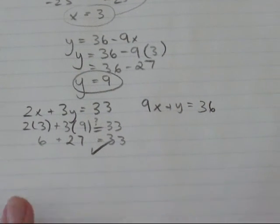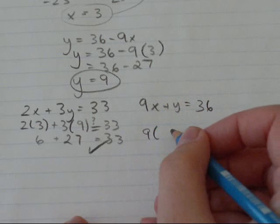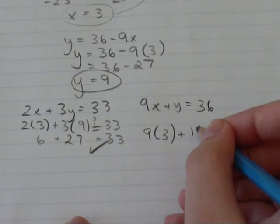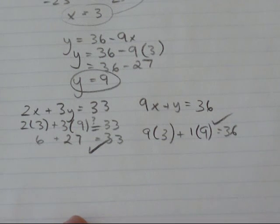And then 9x is 3 plus 1 times 9. Does that equal 36? And it does.